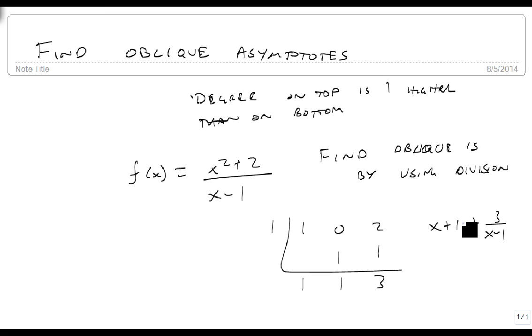And the part we care about is the quotient. We don't care about the remainder. So the oblique asymptote is y equals x plus 1.